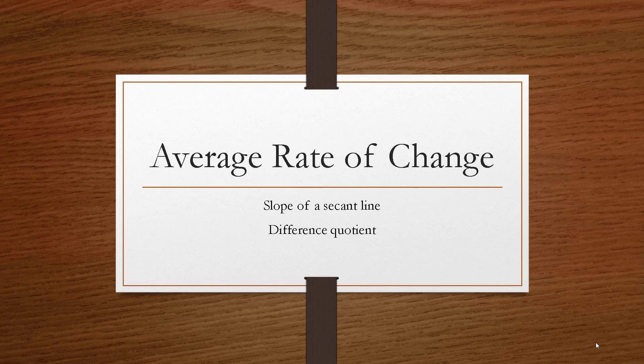In this video we'll explore something called the average rate of change, secant lines and their slope, and the difference quotient.